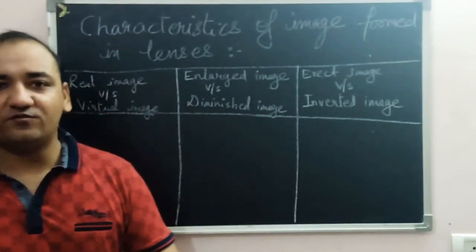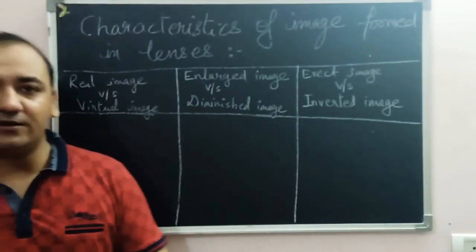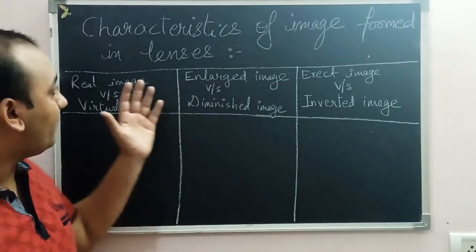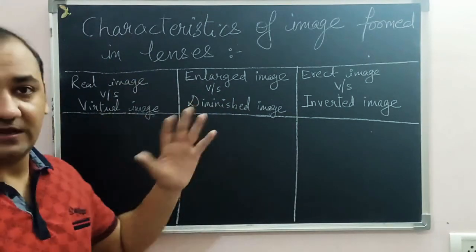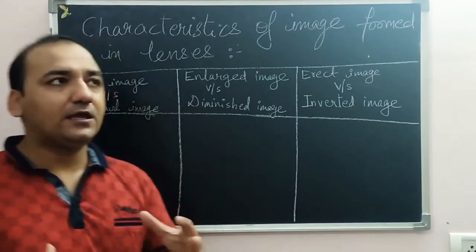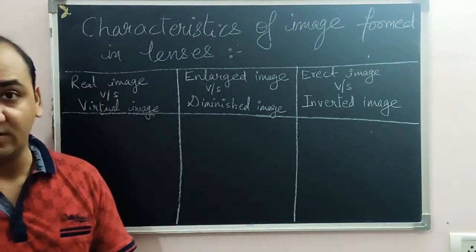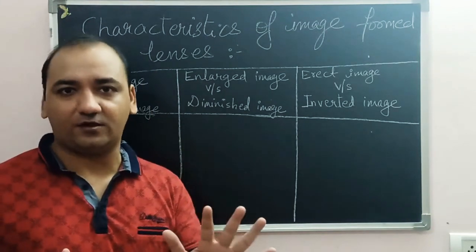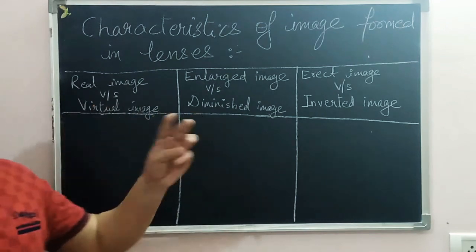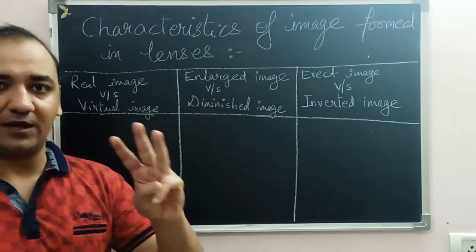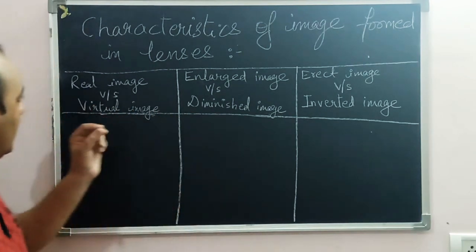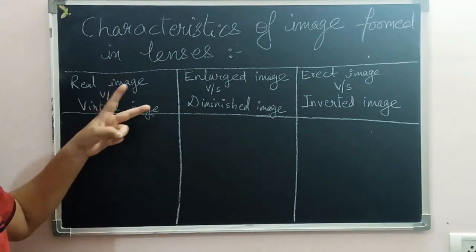Now let's understand the characteristics of images formed by lenses — what types of images are possible and what their characteristics are. Primarily there are six characteristics, and they come in three pairs. Each image will have three characteristics at one time, one from each pair.